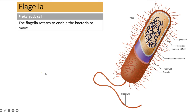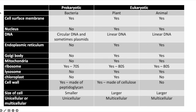Flagella are only sometimes present on bacteria; they rotate and help the bacteria move. This comparative table of structures found in prokaryotic organisms versus eukaryotic organisms — split into plants and animals — would be a good one to copy down for revision.